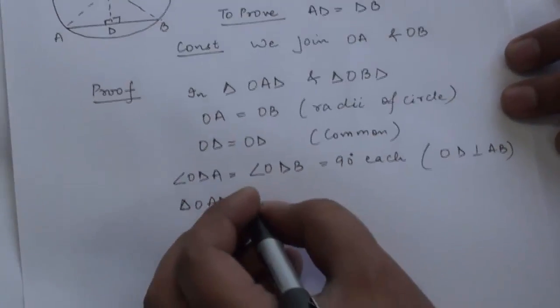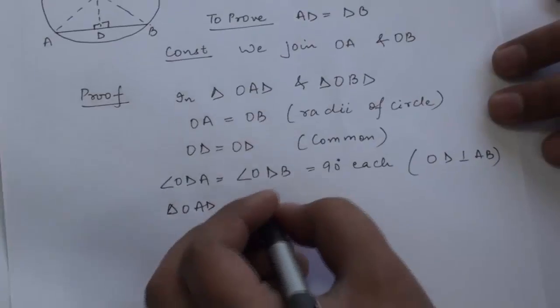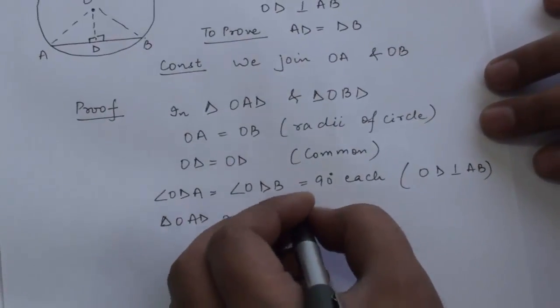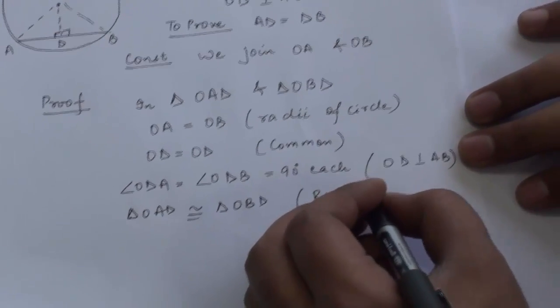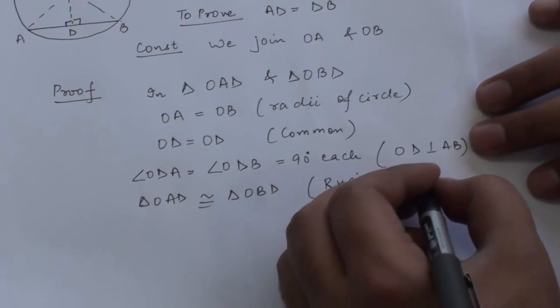Triangle OAD is congruent to triangle OBD by RHS congruency.